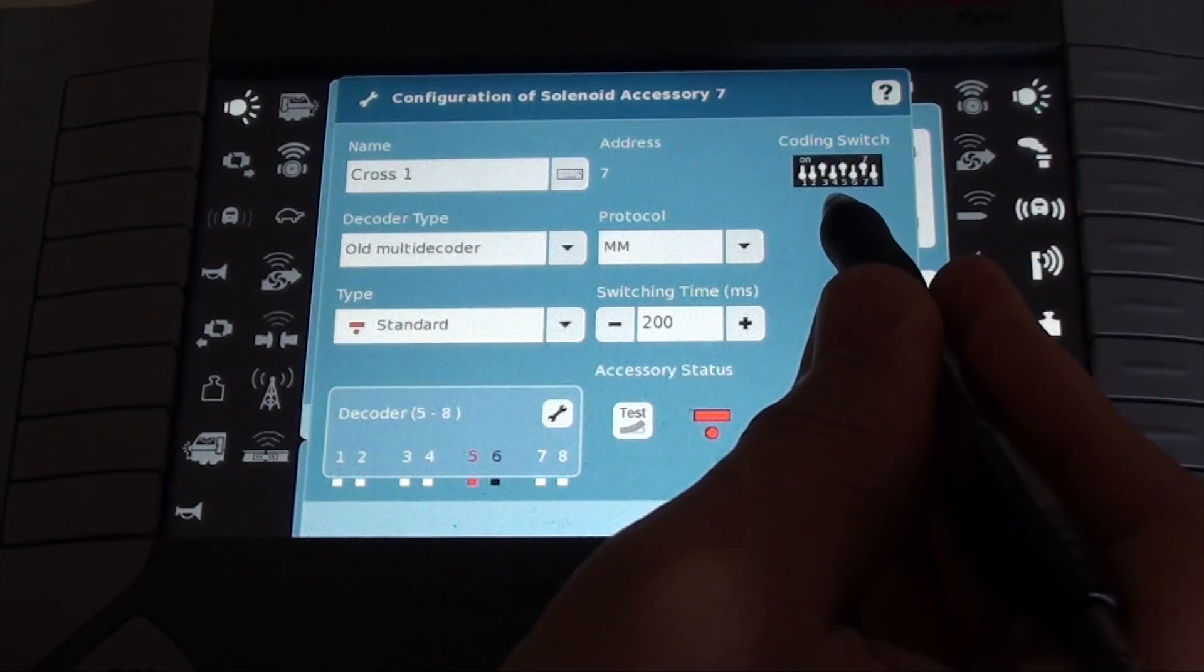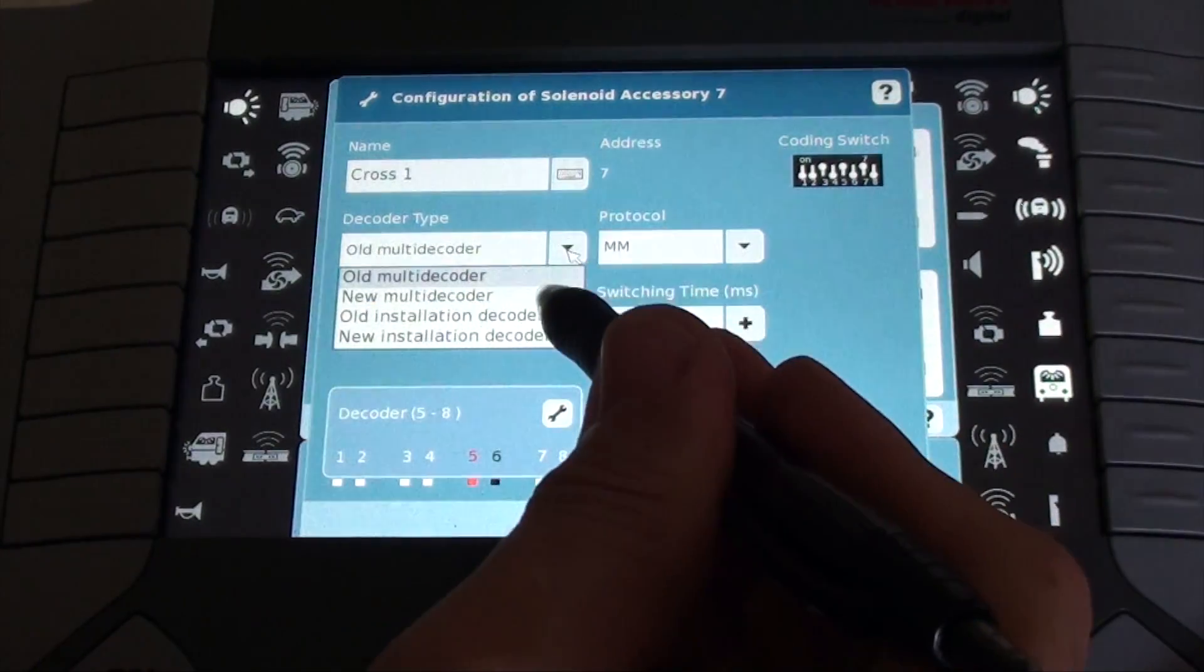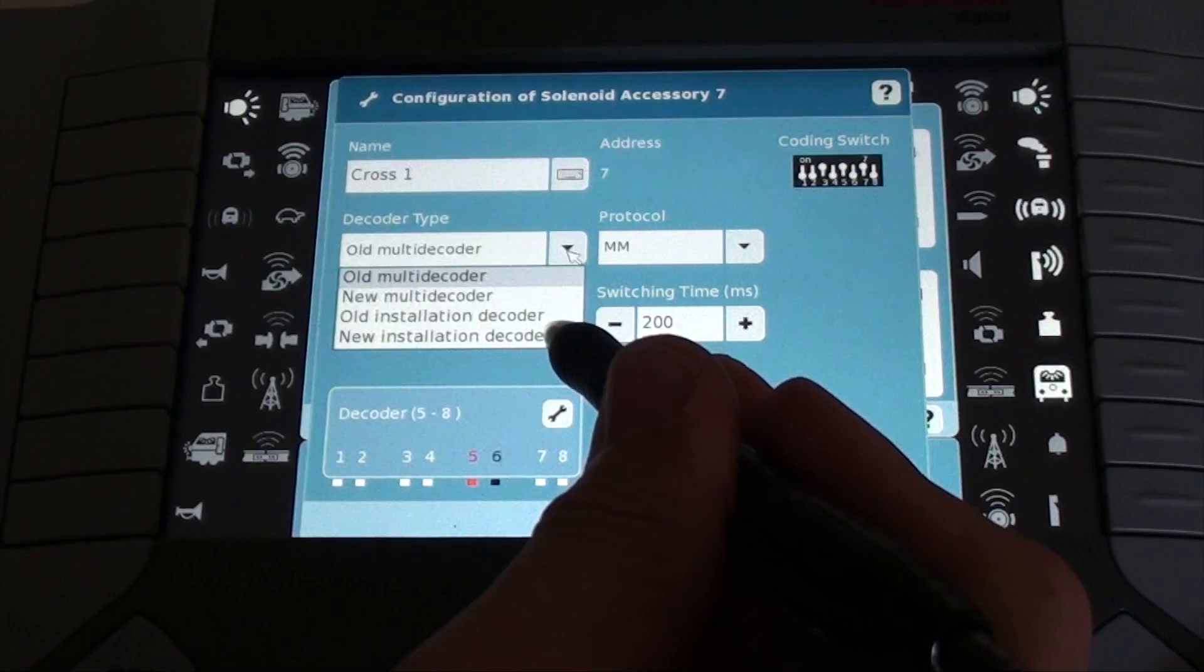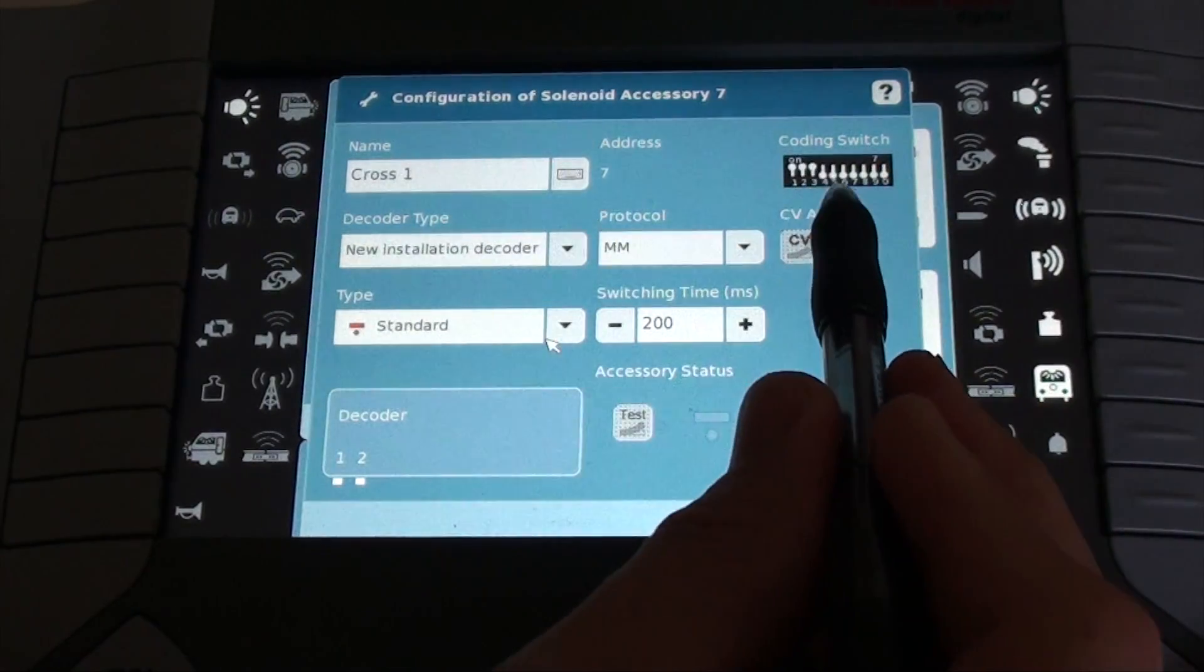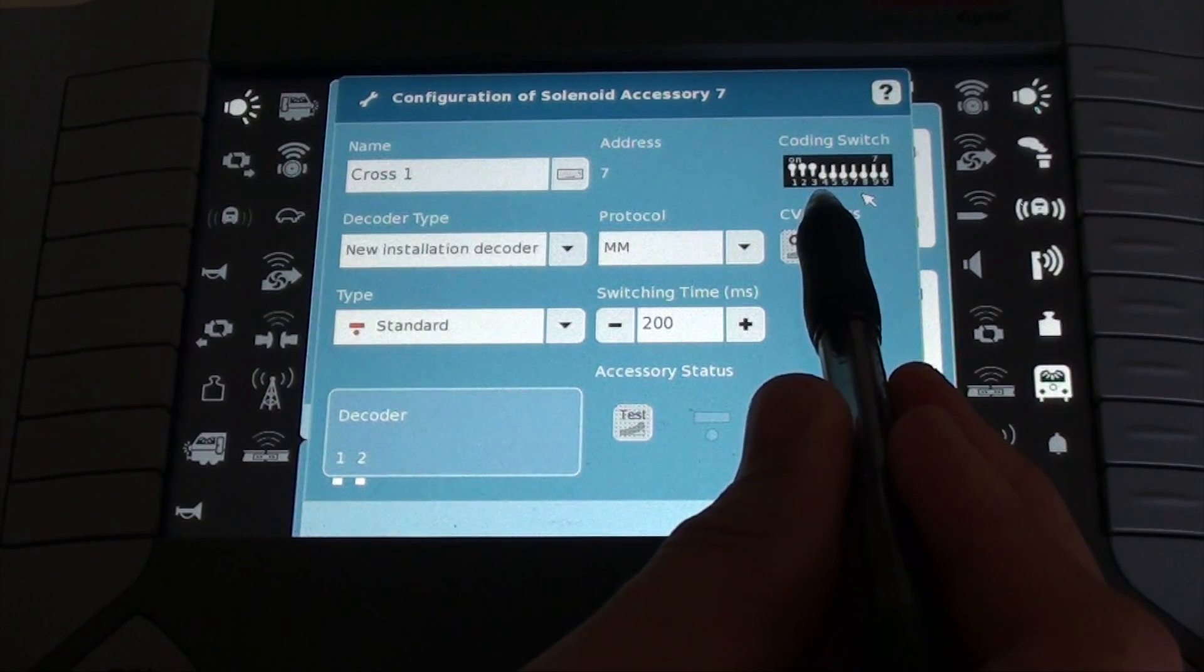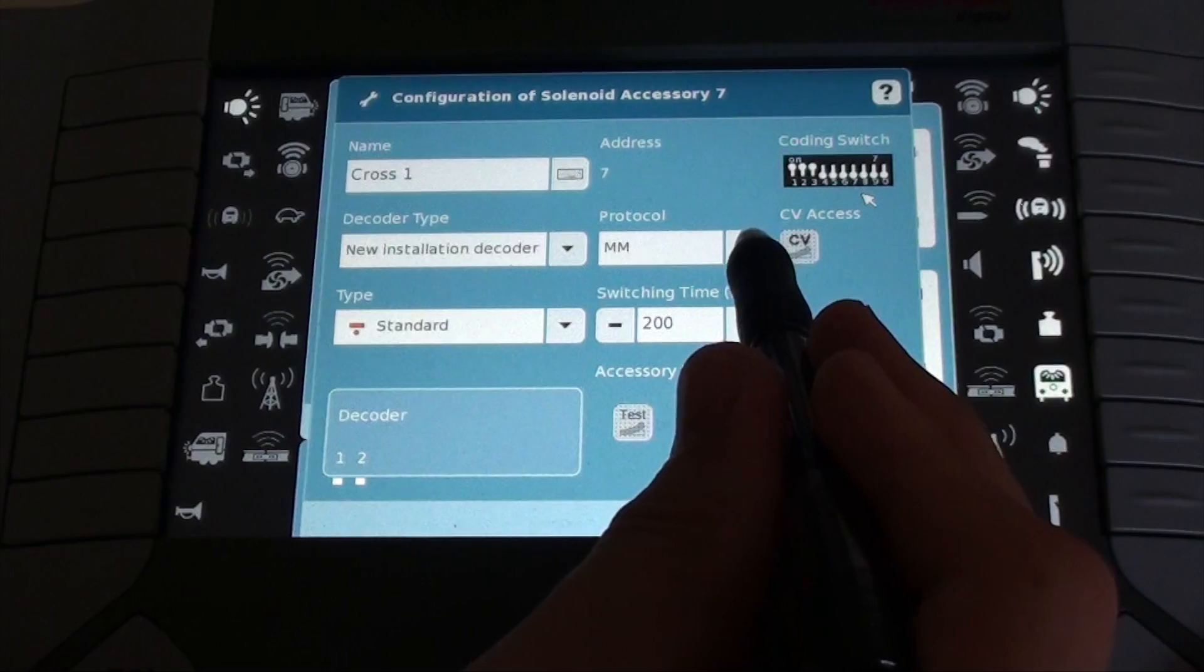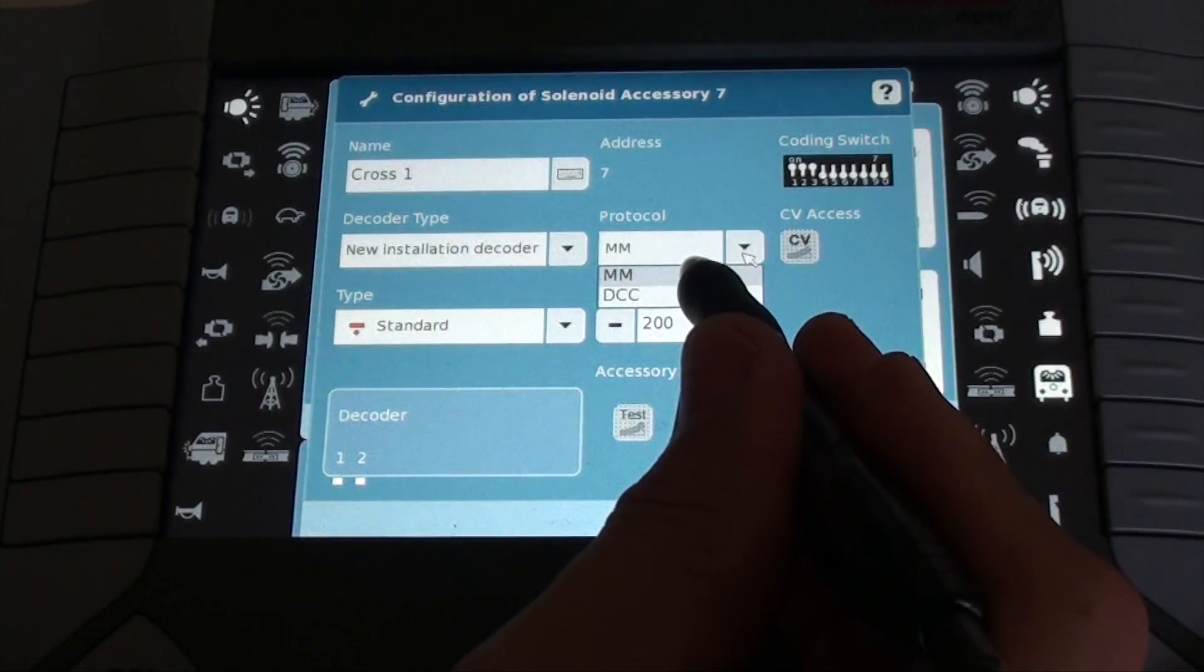It's not an old multi decoder. So I selected drop down box and change it to a new installation decoder. As you can tell, it now shows me actually what the coding switches need to be. One, two and three up. Everything else down. The protocol will leave it MM, Merklin Motorola.